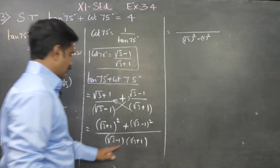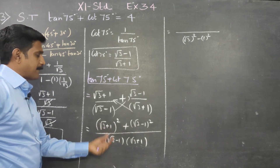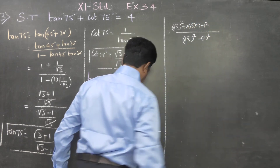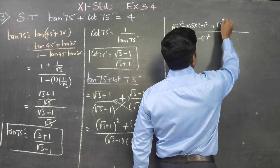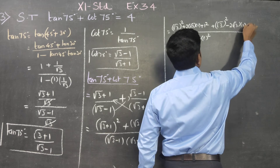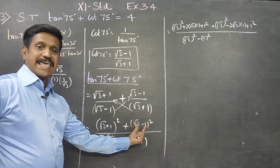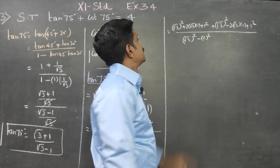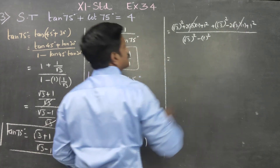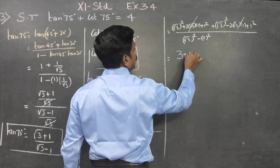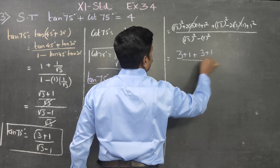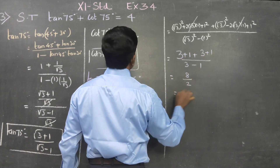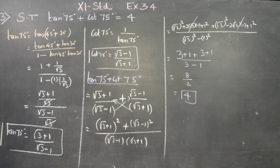The denominator uses the identity (a minus b)(a plus b) equals a squared minus b squared. For the numerator, (a + b) whole squared equals a squared plus 2ab plus b squared, and (a minus b) whole squared equals a squared minus 2ab plus b squared. Adding these: 2a squared plus 2b squared. The denominator is 3 minus 1 equals 2. Substituting: numerator gives 3 plus 1 plus 3 plus 1 equals 8, and 8 divided by 2 equals 4. The final answer is 4.